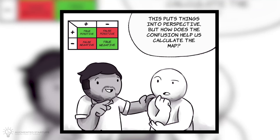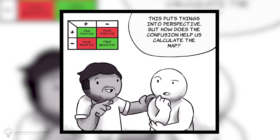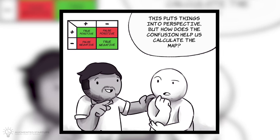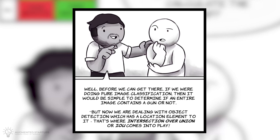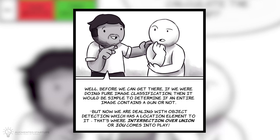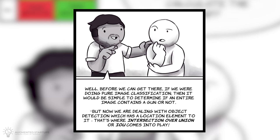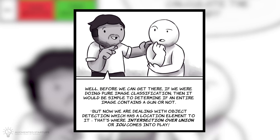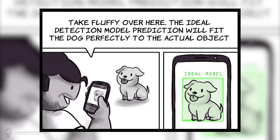This puts things into perspective, but how does the confusion matrix help us calculate the MAP? Well, before we can get there, if you were doing pure image classification, it would be simple to determine if an entire image contains a gun or not. But now, we are dealing with object detection, which has a location element to it. This is where intersection over union, or IOU, comes into play.